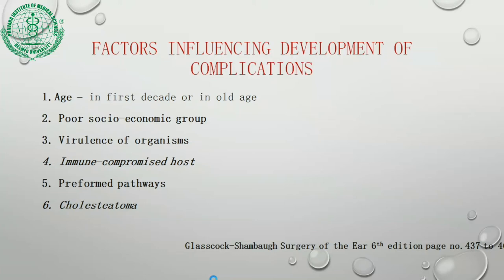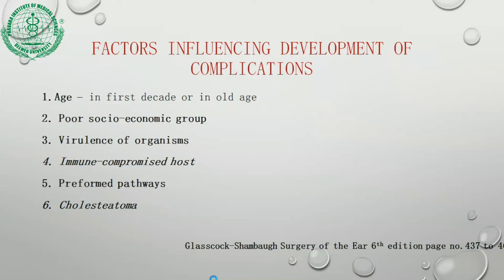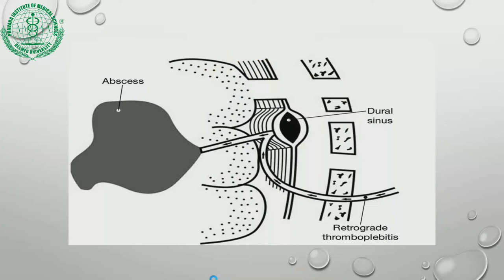There are some preformed pathways which cause complications, and lastly there is cholesteatoma. Pathways of spread of infection: the most common is direct bone erosion. In acute infection it is by hyperemic decalcification. In chronic infection it is mostly due to osteitis or erosion by cholesteatoma or granulation tissue. Second is venous thrombophlebitis — veins of the Haversian canals connect with the dural veins, which in turn connect with the dural sinuses and superficial veins of the brain.